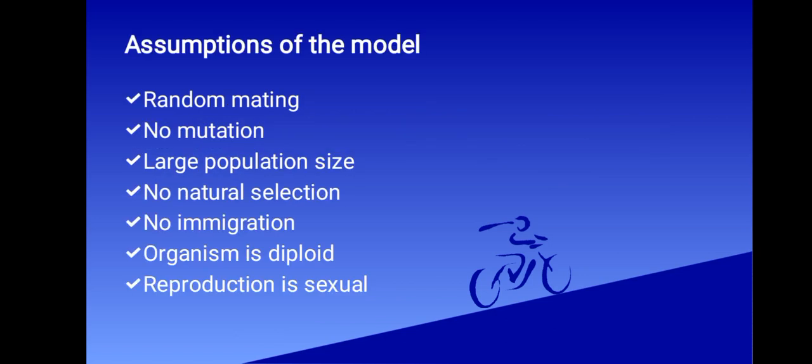This model has various assumptions. They include: one, random mating. There is neither preference for nor aversion to the union in the choices of mates. The second assumption is no mutation. We assume that genetic information is transmitted from parent to progeny without change. Mutations provide the genetic variability that is our primary concern in genetics.